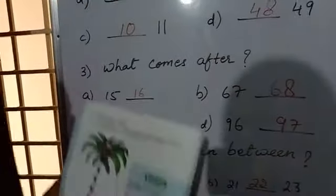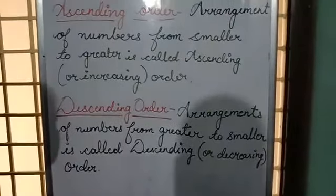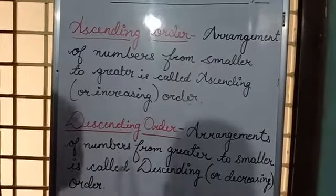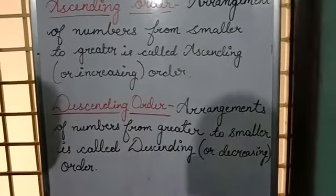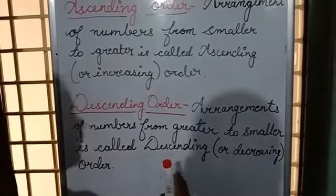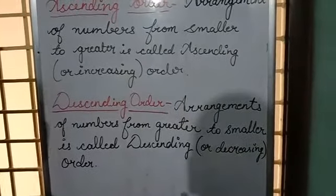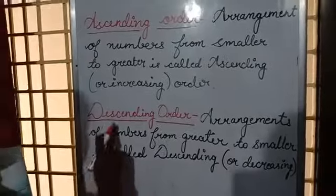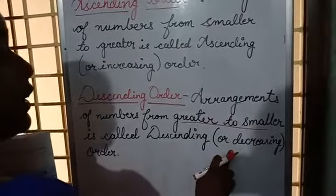Next topic is ascending and descending order. What do you mean by ascending order? Ascending order means arrangement of numbers from smaller to greater, is called ascending or increasing order. In this, you have to arrange the numbers from smaller to greater. First you will arrange the smaller number, then the next greater number, and last one is the greatest number at last. Next one is descending order. That means arrangement of numbers from greater to smaller, is called descending or decreasing order.